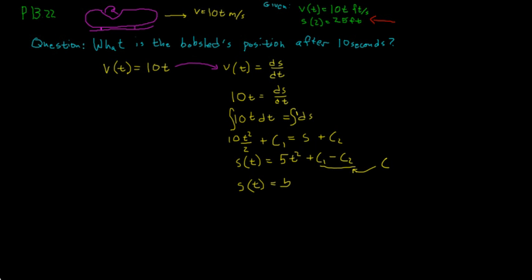Now we have a function s of t, and we have an initial condition, s of 2. So we can plug in to solve for c. So we know that s of 2 has to be equal to 5 times 2 squared plus a constant. And we know that is going to be equal to 25. So we can solve for c here. So we have 5 and 2 squared is going to be 4. So this is 20 plus c is equal to 25. So c has to be equal to 5.